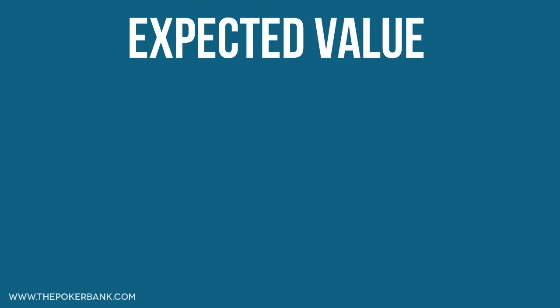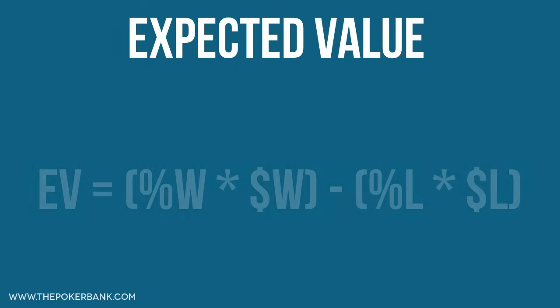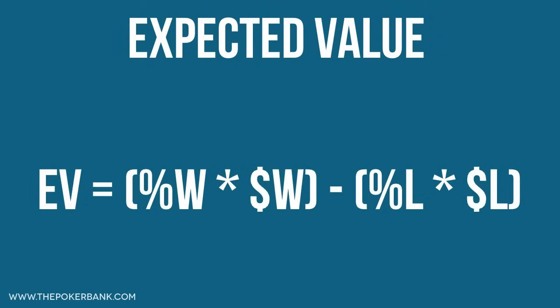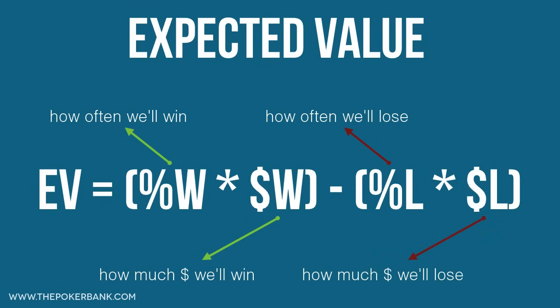Because EV is mathematical there is a formula, but it's not that scary. This is the basic structure of EV equations we will use in poker. We have %W, which is how often we will win a given hand. We have Money W, which is how much we will win the times we do win. We have %L, which is how often we will lose this hand. And last we have Money L, which is how much money we will lose when we lose the hand.